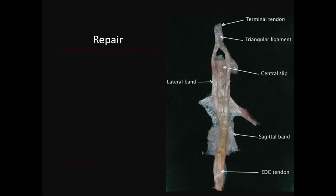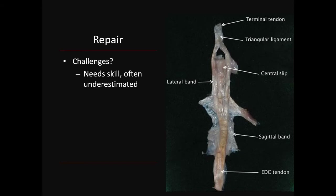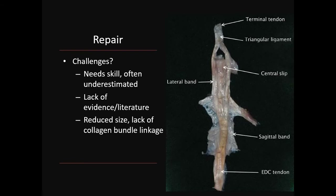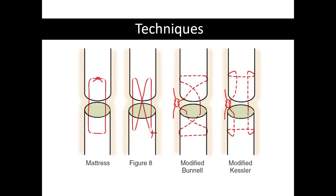Coming on to the repairs, there are lots of challenges and nuances involved, and they are often left to the most junior members of the team. These injuries are often underestimated and easy to miss. The lack of evidence and literature surrounding the subject leads to varied practices across surgeons, and repairs can be challenging due to the flat nature of the tendon distally and the reduced bulk. There are hundreds of techniques, but common ones include the mattress suture, figure of eight, and modified Kessler. Depending on which zone you're in, how thick the tendon substance is, and what you're trying to achieve will determine what technique you use.